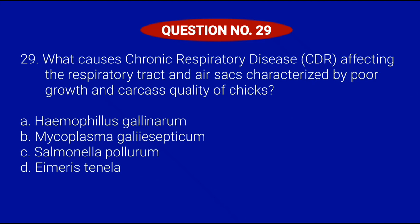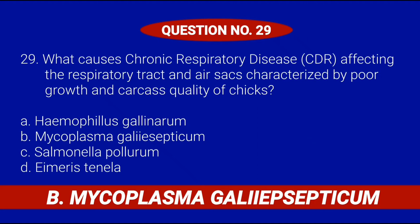Question number 29. What causes chronic respiratory disease (CRD) affecting the respiratory tract and air sacs, characterized by poor growth and carcass quality of chicks? Letter A, Haemophilus gallinarum; Letter B, Mycoplasma gallisepticum; Letter C, Salmonella pullorum; or Letter D, Eimeria tenella. Correct answer is Letter B, Mycoplasma gallisepticum.